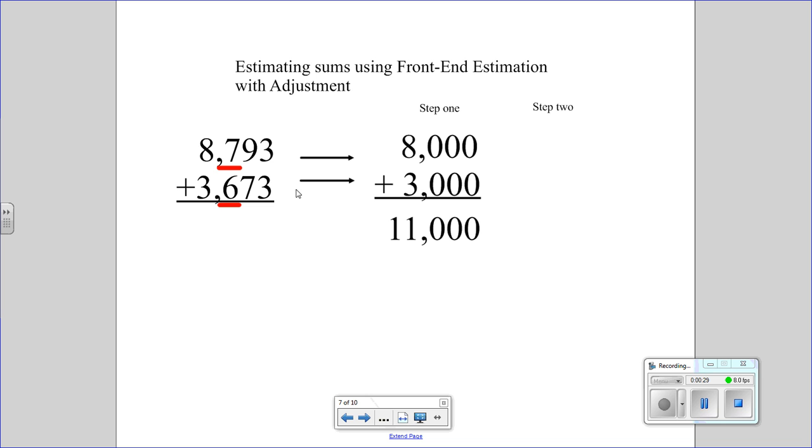In step two, you look at the place just to the right of where you did your first Front End Estimation, and you add up those values, and that would be 700 plus 600, gives us 1,300.